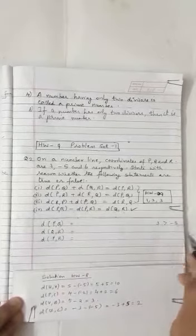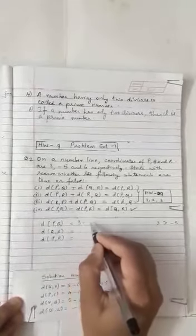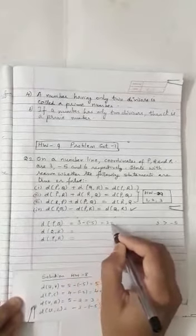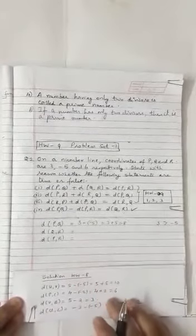So 3 minus of minus 5, so 3 plus 5 is equal to 8.